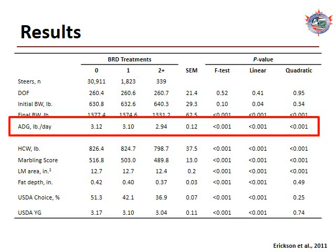Average daily gains for animals treated zero, one, and two or more times were 3.12, 3.10, and 2.94 pounds per day respectively. Numerically, the average daily gain of animals treated zero or one times are quite similar, consistent with what Jim and others reported in 1993. However, there is a statistically significant trend for average daily gain to decrease as BRD treatments increase from zero to two or more treatments.